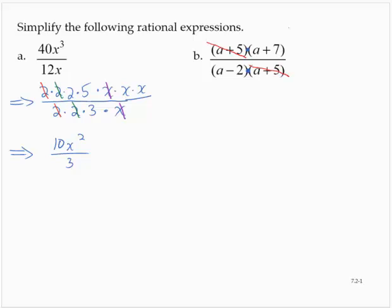And that leaves me with a plus 7 over a minus 2. And that's where we would have to stop. We cannot divide out the a's because they are not factors. They are terms.